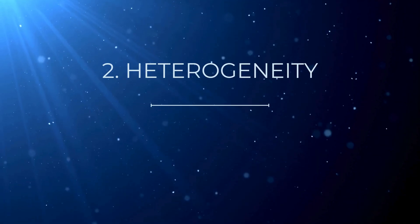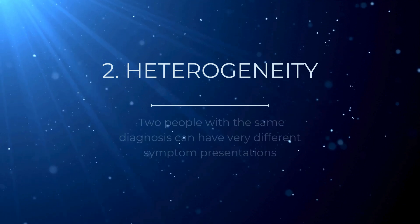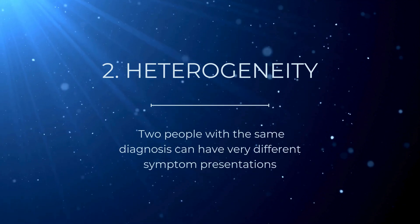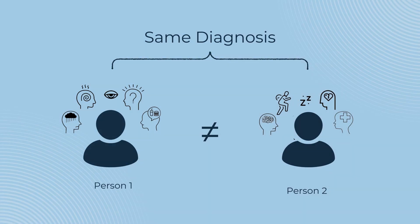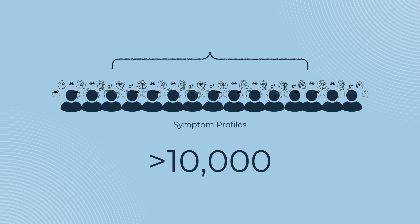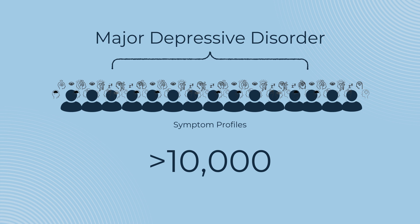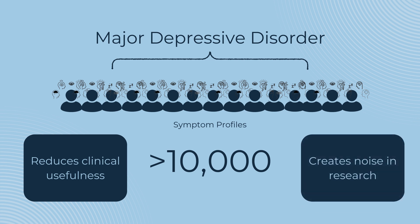Heterogeneity. The checklist approach in the DSM means that two people with the same diagnosis can have very different symptom presentations, even sharing no symptoms in common. For example, there are more than 10,000 symptom profiles that can satisfy diagnostic criteria for major depressive disorder. This reduces the clinical usefulness of diagnostic labels and creates unnecessary noise in research.